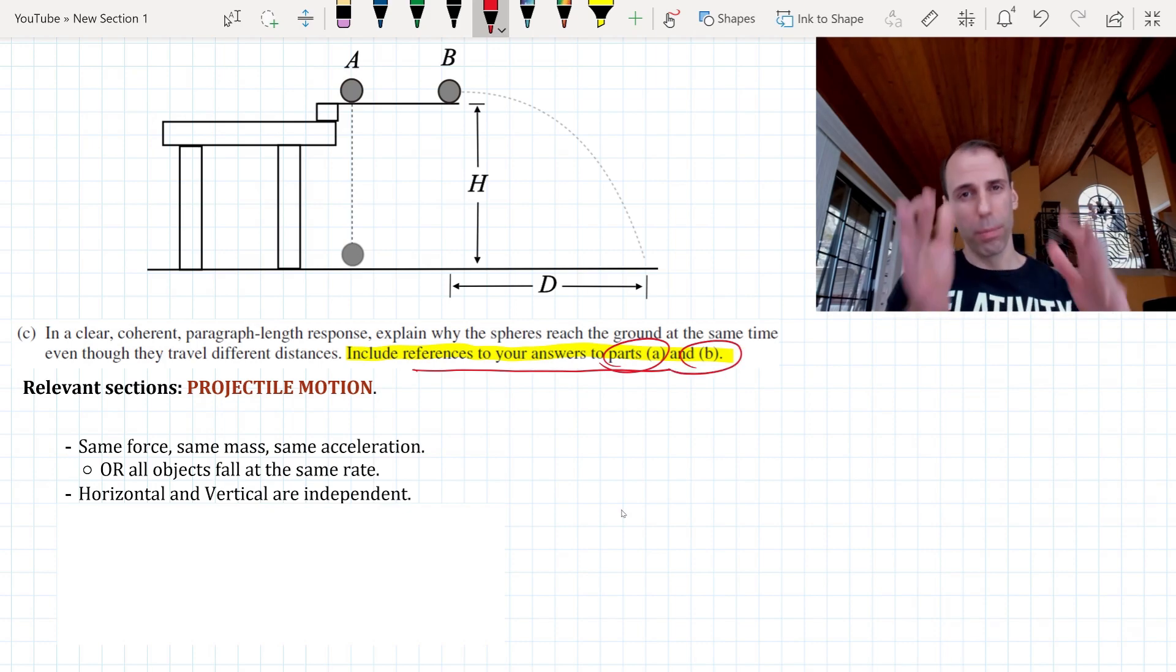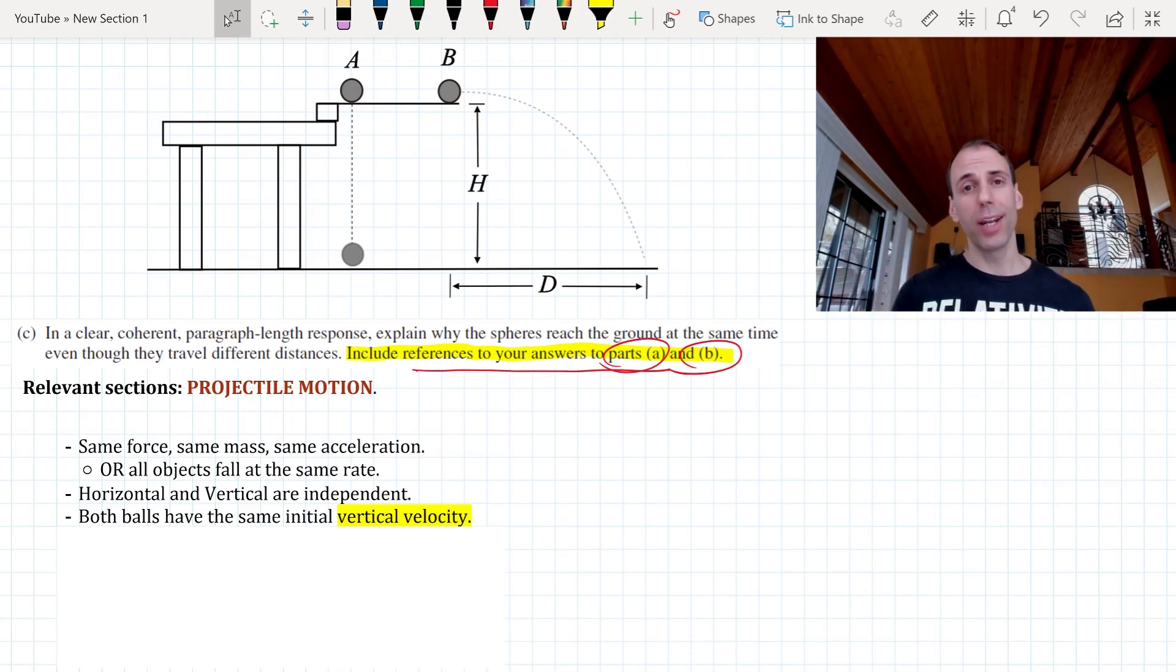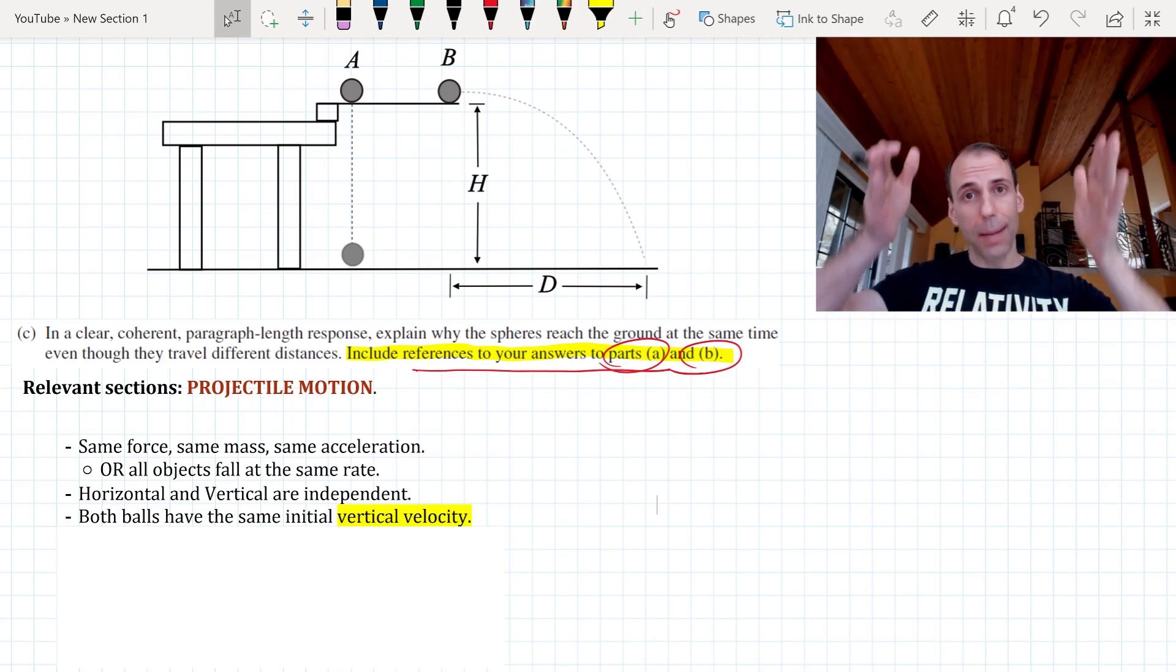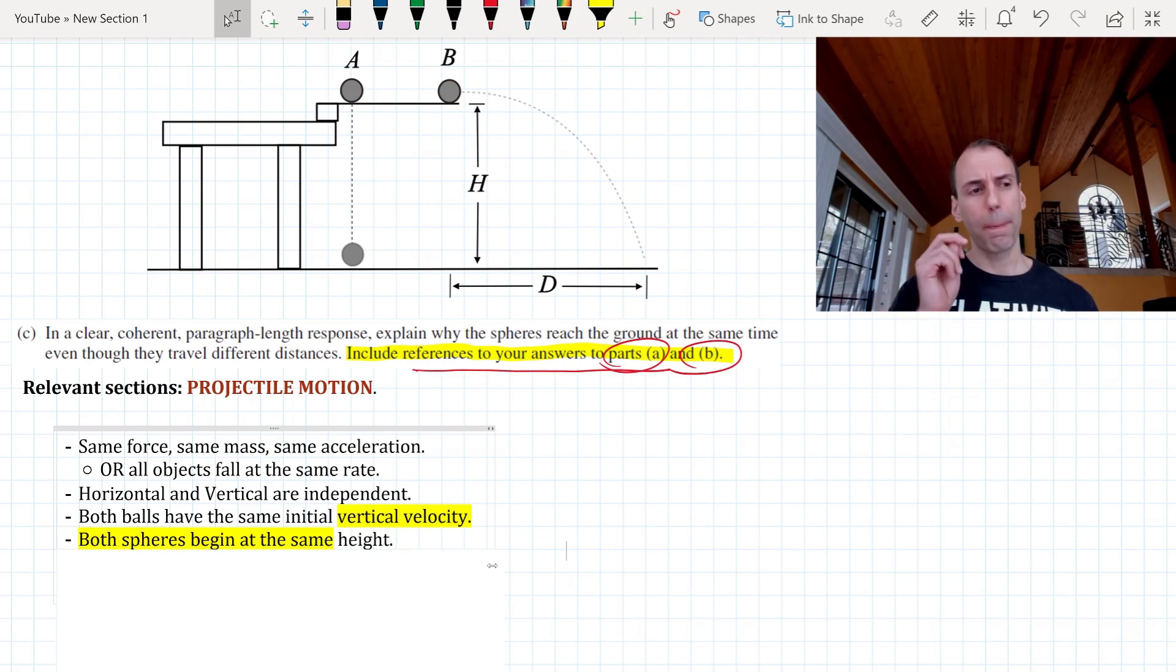And now the third point, which most every student omits and it's not their fault. When I first wrote my own answer myself I forgot to include this key point too. It's both balls have the same initial vertical velocity. It's rather obvious but you have to point it out. Oh, because ball A and ball B begin with the same vertical velocity, this is not going to affect their time traveling towards the ground. Has to be pointed out. Last point, both spheres begin at the same height. Again, super obvious, but you might not think to point it out.